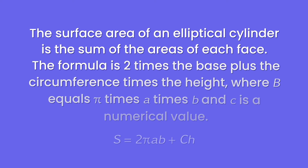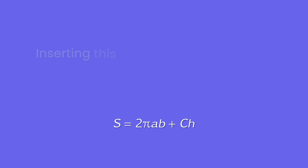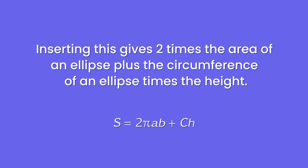To recap: the surface area of an elliptical cylinder is the sum of the areas of each face. The formula is 2 times the base plus the circumference times the height, where B equals pi times A times B, and C is a numerical value. Inserting this gives 2 times the area of an ellipse plus the circumference of an ellipse times the height.